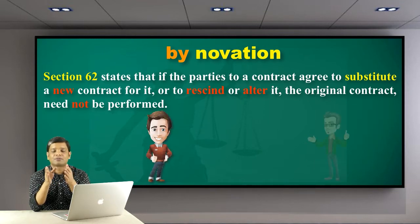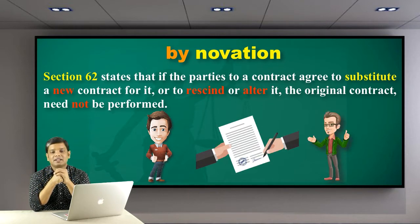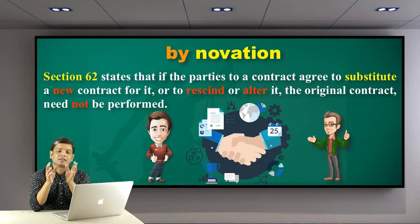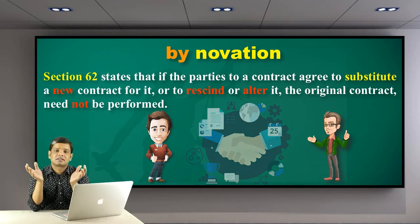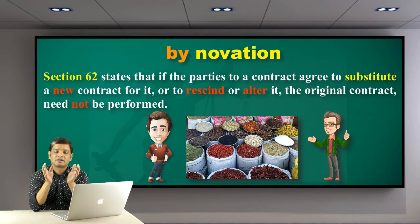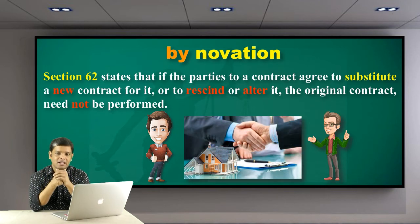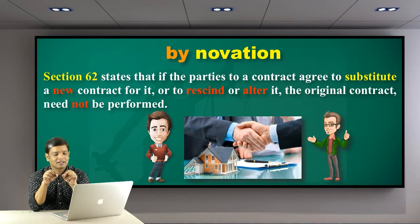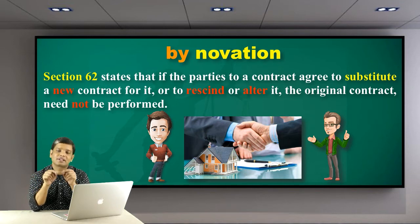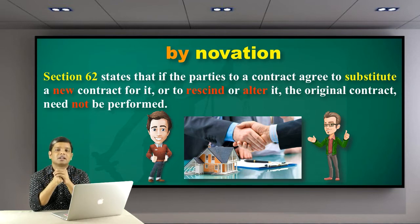For example, you and your friend made a contract to start the business of selling spices. After some time, both of you thought there is not much benefit in the spices business, so why not start a property dealing business instead? Both of you agreed to leave that business and start something new. This is novation — both of you agreed not to perform the first contract and started doing something new, so that contract is discharged through novation and a new contract is made.